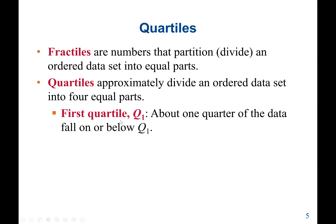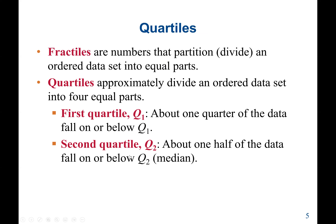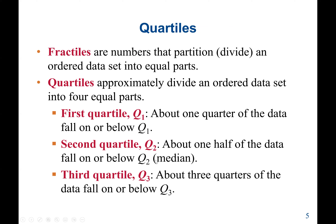We have the first quartile, Q1 — about one quarter of the data fall on or below Q1. The second quartile, Q2, means about one half of the data fall on or below Q2, which is normally the same as the median. To find Q2 or Q1, we have to put the data set in order. Finding Q2 is the same as finding the median: first we sort the data, then we take the middle value. Q3 means about three quarters of the data fall on or below Q3.